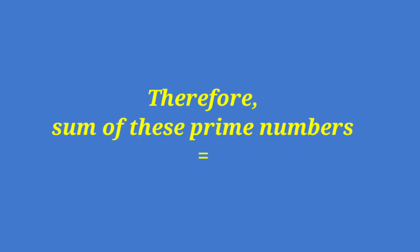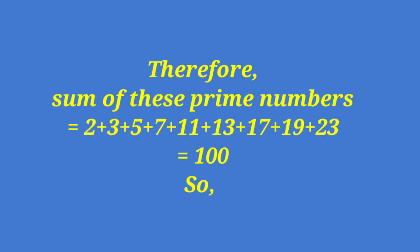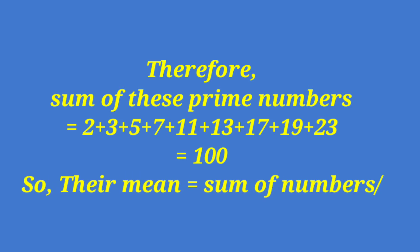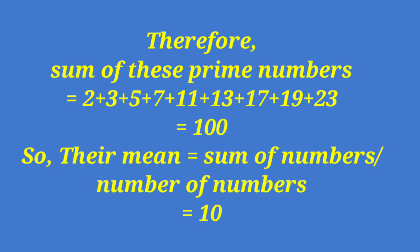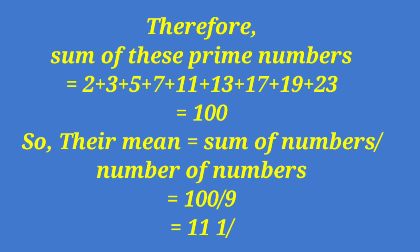Now we take the sum of these prime numbers: 2 plus 3 plus 5 plus 7 plus 11 plus 13 plus 17 plus 19 plus 23. The total comes to 100. So their mean equals sum of numbers, which is 100, divided by the number of numbers.